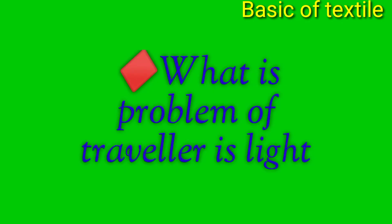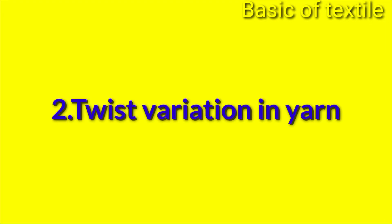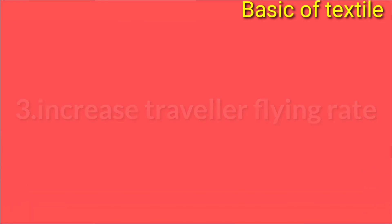Now, what is the problem if the traveller is light? Number one, reduce yarn tension in coils; number two, twist variation in yarn; number three, increase traveller flying rate; number four, increase yarn harness.